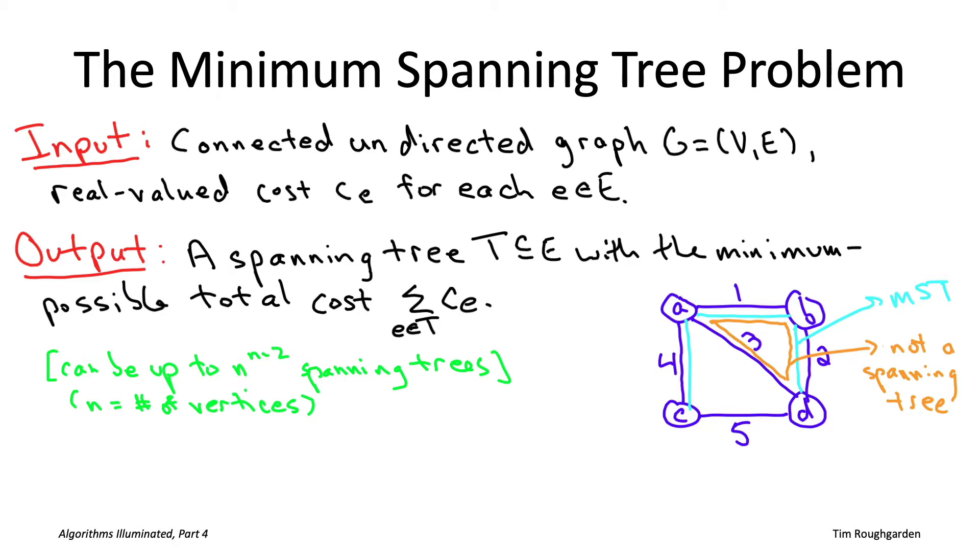So what does that mean for us? Graphs can have a ton of spanning trees. Well, that says that the most naive algorithm you could think about—exhaustive search, where you literally just go spanning tree by spanning tree and remember the best one that you've ever seen—that is a totally hopeless algorithm to implement except in the tiniest of graphs. So there's a lot of spanning trees. Exhaustive search is definitely not going to be a fast algorithm.